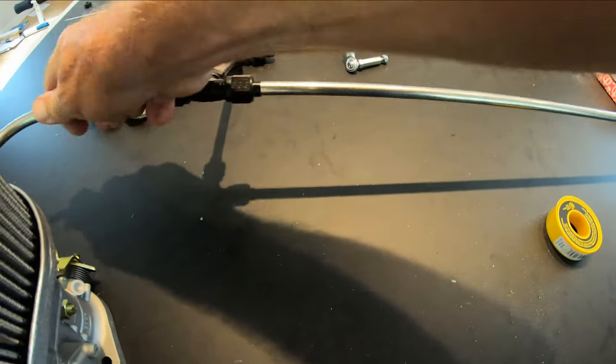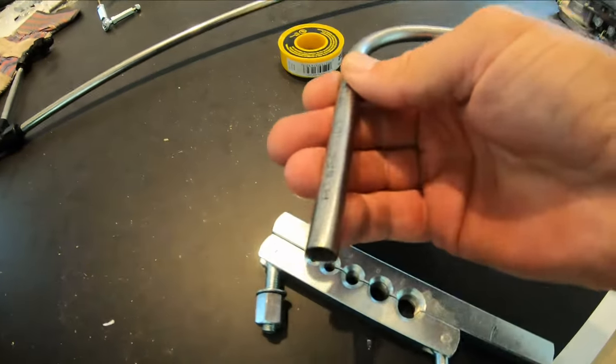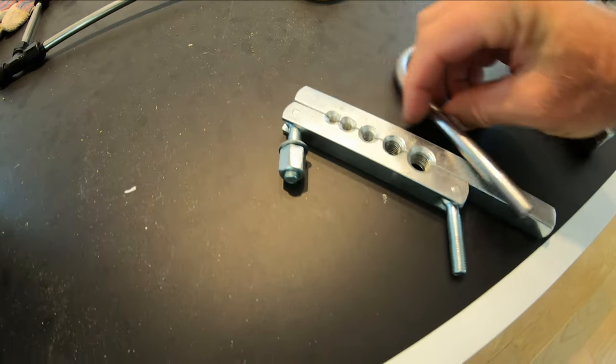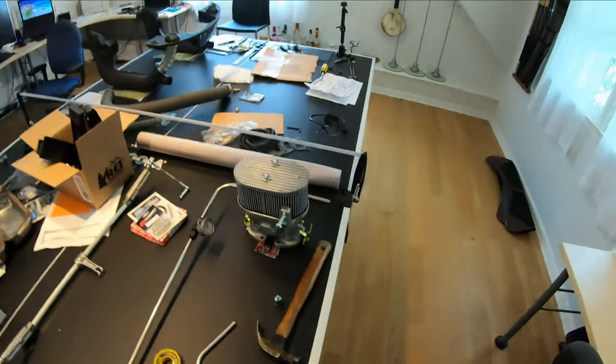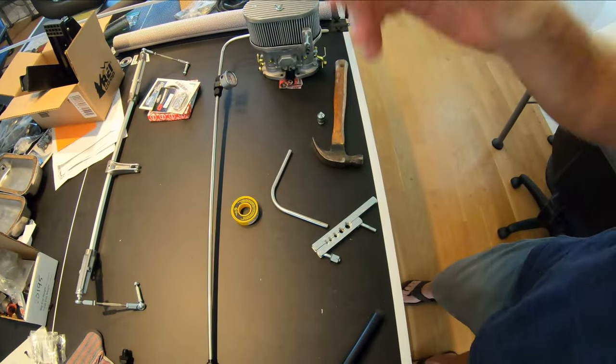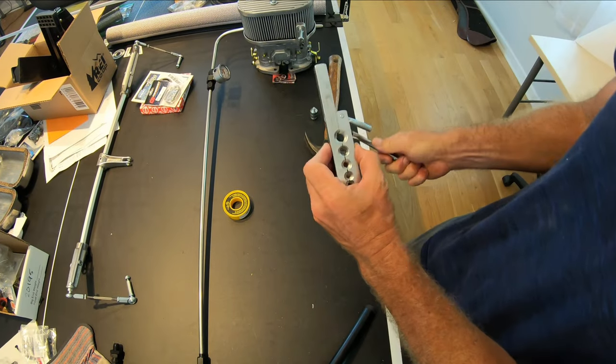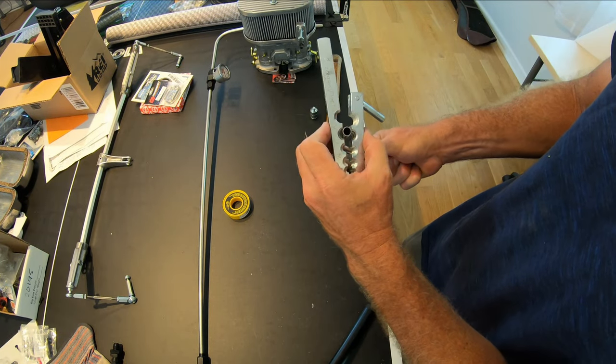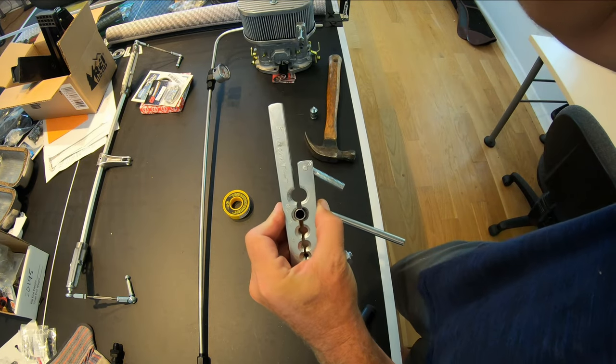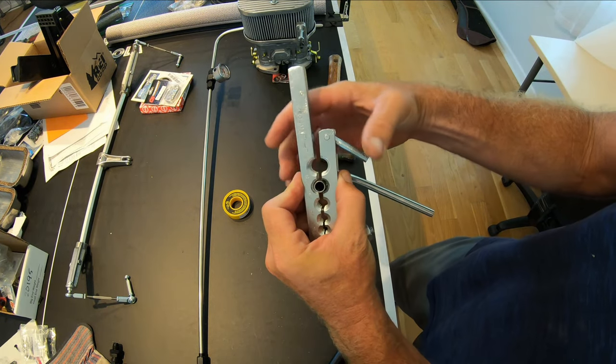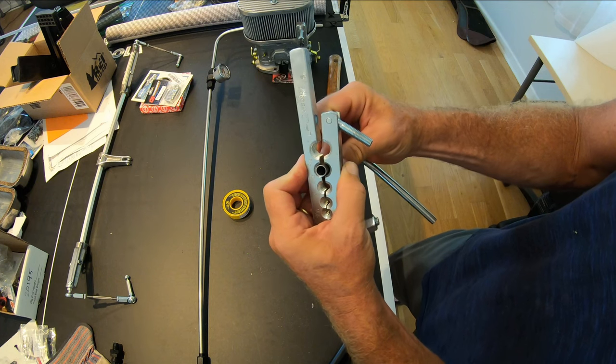So what I've started doing, and this actually works really pretty well: I've been taking the tube and I put it into here, and I put this in my vise. Once I have that in my vise, I've clamped this down like crazy so that the vise has got this totally clamped down.